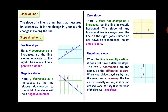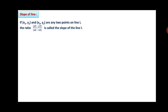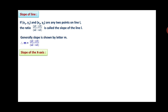Undefined slope: when the line is exactly vertical, the two x-coordinates are the same so the difference is zero. When we divide anything by zero, the result has no meaning, so a vertical line has no defined slope — we say the slope of the line AB is undefined. Now, the formula: if (x1, y1) and (x2, y2) are any two points on line L, the ratio (y2 − y1)/(x2 − x1) is called the slope of line L, generally shown by the letter M. Therefore M = (y2 − y1)/(x2 − x1).